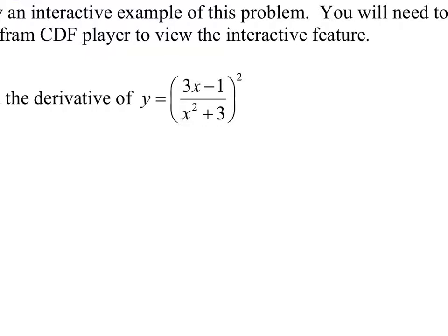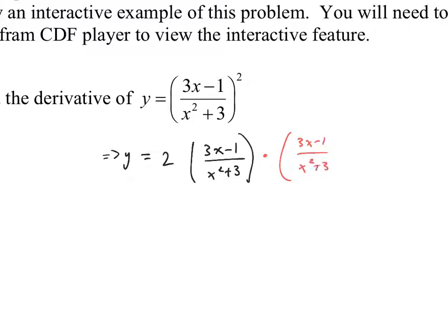The chain rule says: if we're looking at (3x - 1)/(x² + 3) quantity squared, to find the derivative you drop the power, keep the inside the same to the power minus 1, then multiply by the derivative of the inside. So drop the power — that gives a 2 — keep the inside the same: (3x - 1)/(x² + 3) to the first power. But then we need to find the derivative of the inside.